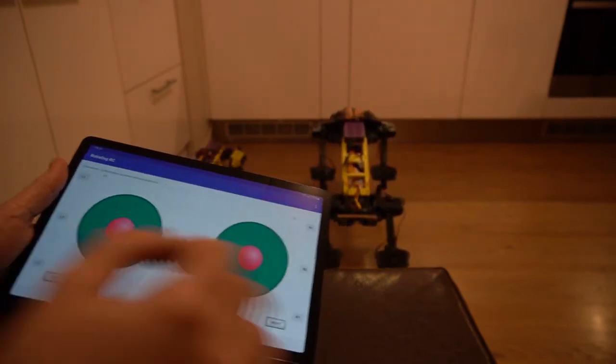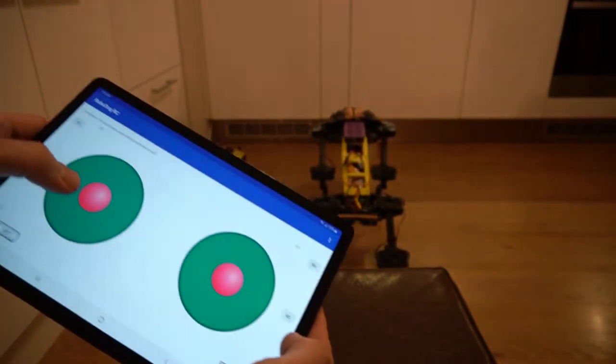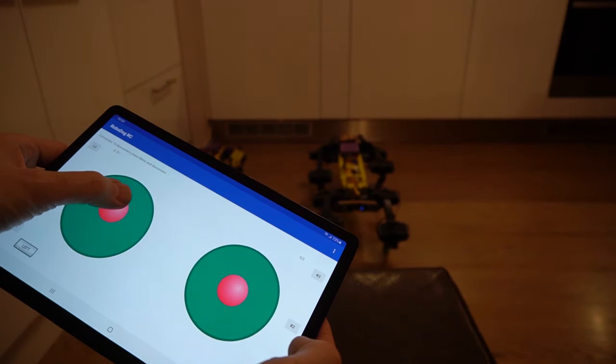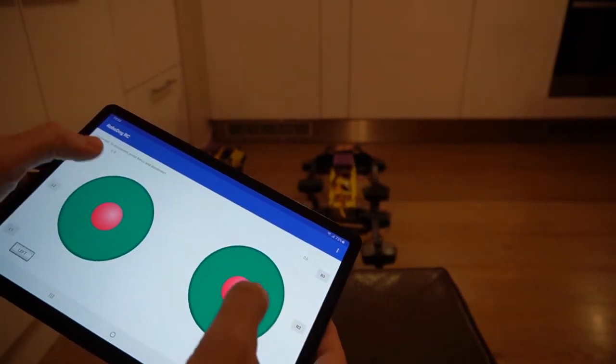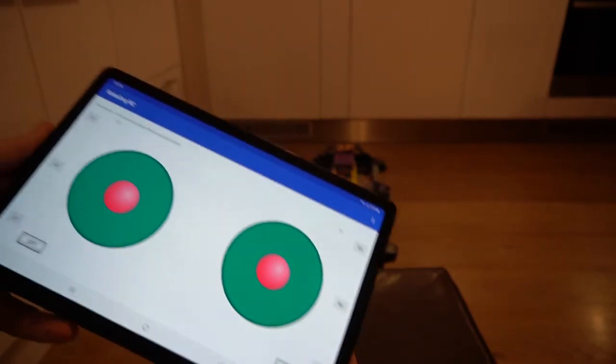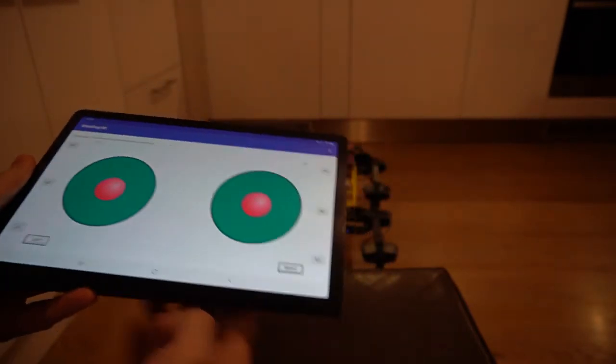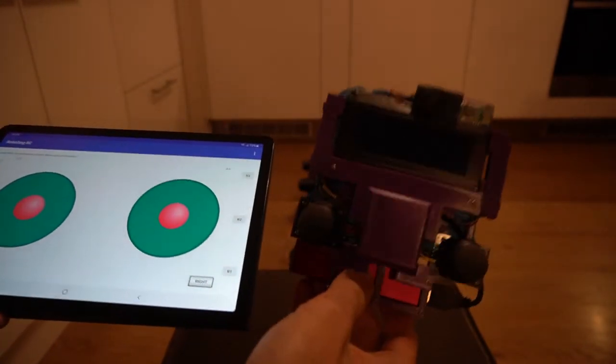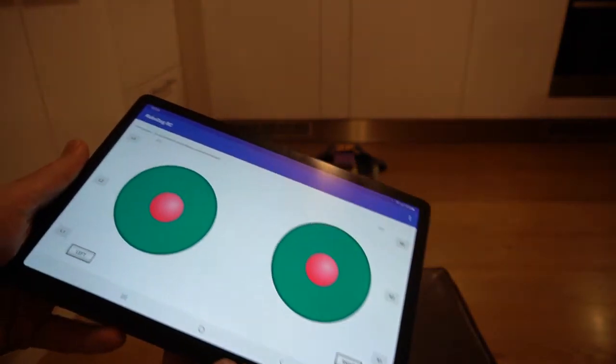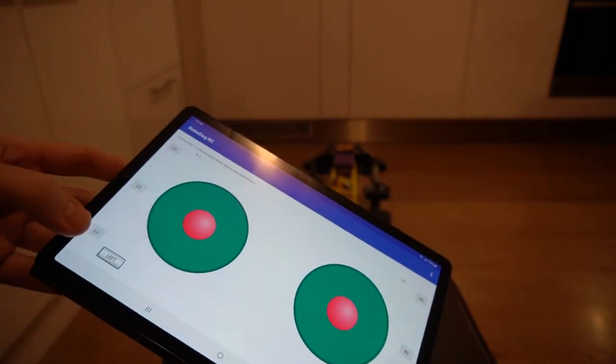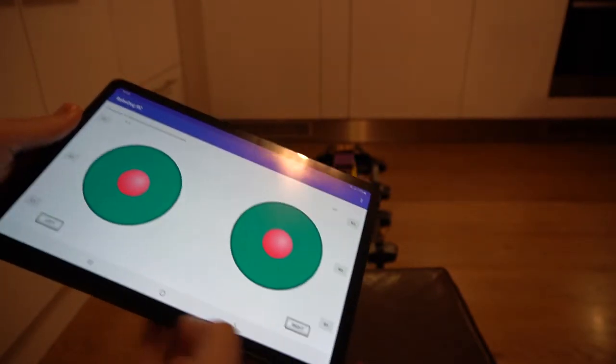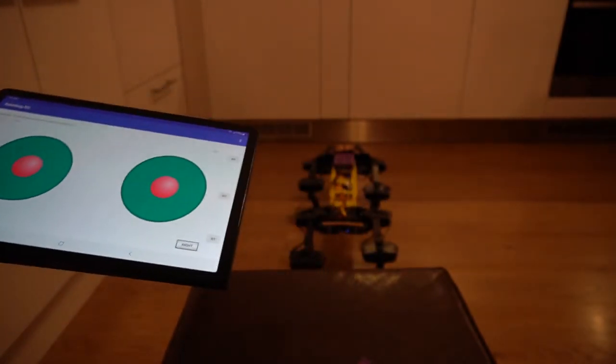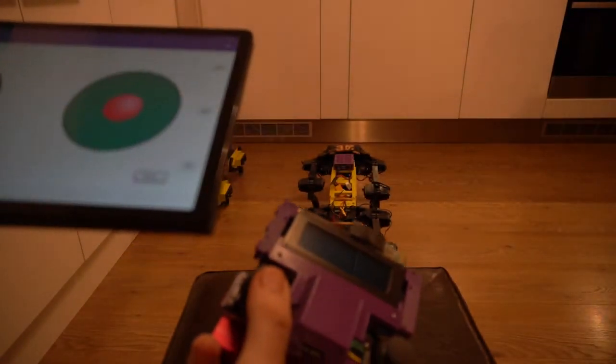Now the robot is connected and I can control it with the virtual joystick. The joystick has the same functionality as the physical one. It has three buttons on the left: one, two, three. Three buttons on the right: one, two, three. And two buttons that correspond to the buttons on the sticks.